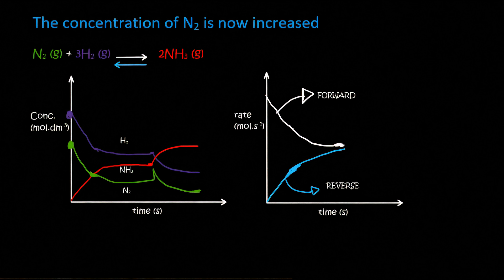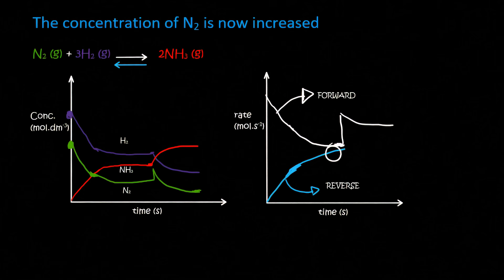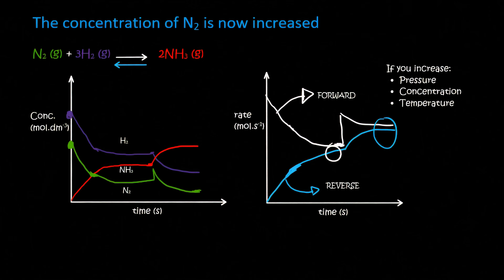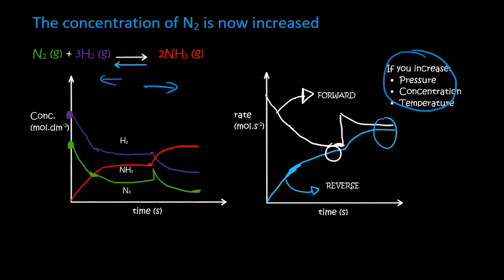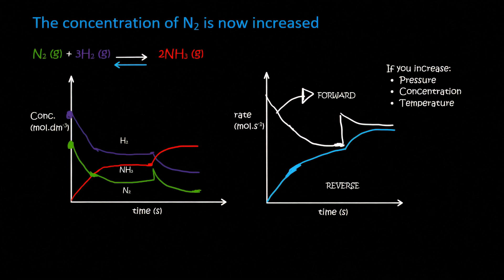Now we need to look at how the rate graph changed. We know that the forward reaction was favoured, so you go to the forward reaction — the one up here — and let it spike upwards. You then let it settle a little bit but at a higher level than before. Then the blue graph, which is the reverse reaction, will simply go and join it. So the system reaches equilibrium at a higher level than before. That is because if you increase pressure, concentration, or temperature, the system's speed has to increase — no matter whether the equilibrium goes left or right.